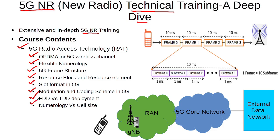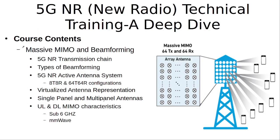We discuss the difference between the FDD and TDD deployment, and then we discuss how the selected numerology affects the cell size. Then we discuss massive MIMO and beamforming, and at the start of this section we discuss the 5G NR transmission chain, what are the different types of beamforming that are used, and we discuss the 5G antenna — called the active antenna system — which can have different configurations, for example 8 transmit 8 receive, 64 transmit 64 receive, etc.